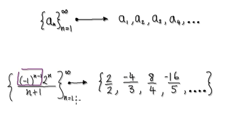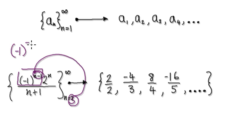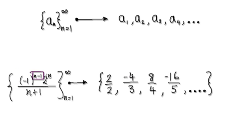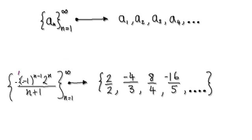Because of this part here: if you put 3 into here, this thing would be negative 1 squared. This part here will alternate the sign — because if you look at it, it's positive, negative, positive, negative. If you put an odd number in, it gives you an even power, and an even number gives an odd power. So this thing here will alternate the sign: plus, minus, plus, minus, and so on.